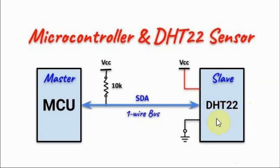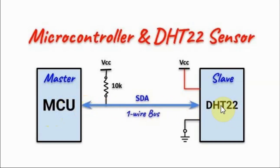The DHT22 sensor is interfaced with the microcontroller using a one-wire serial data line. The microcontroller sends a start signal to the sensor, the sensor acknowledges with a response signal, and then the sensor sends 40-bit data containing a 16-bit temperature value and a 16-bit humidity value.